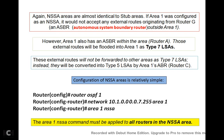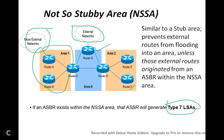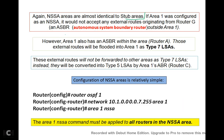NSSA areas are almost identical to stub areas. If area 1 was configured as an NSSA area, it would not accept any external route originating from router V or router G — it will not accept any route from an ASBR outside area 1. However, area 1 also has an ASBR within the area — router A — and those external routes will be flooded into the area as Type 7 LSAs.